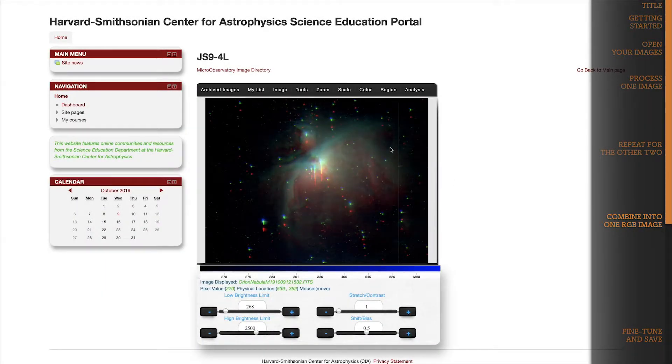Look at that. Now you can see the red, the blue, and the green image layers all on one screen. So you've got your RGB image.